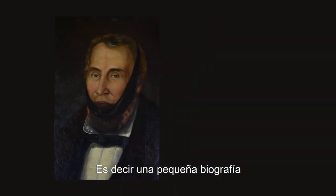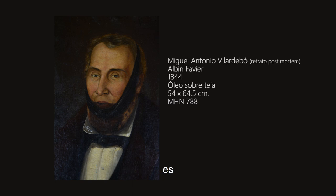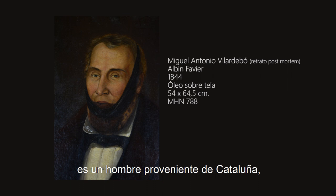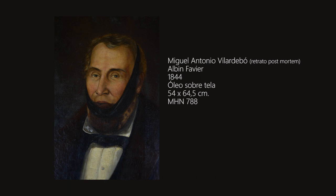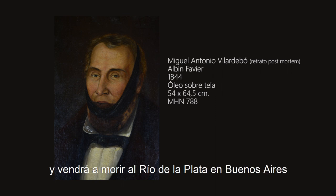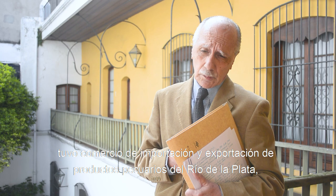I have a little biography. His name is Miguel Antonio Vilar de Bo. He is a man from Catalonia. He was born in Barcelona in 1773 and will die in Buenos Aires in 1844. He was a powerful man, a rich man. He had a market for export of goods from the Río de la Plata.